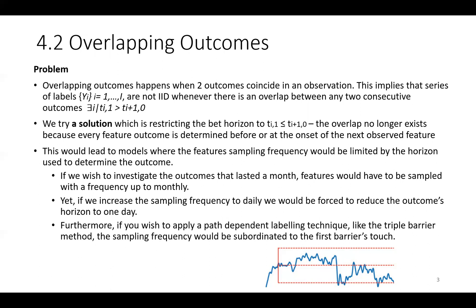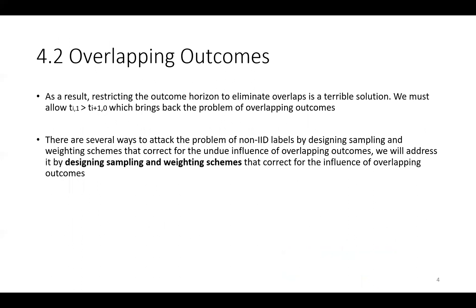Furthermore, if we wish to apply a path-dependent labeling technique like the triple barrier method, the sampling frequency would be subordinated to the first barrier's touch. As a result, restricting the outcome horizon to eliminate overlaps is a terrible solution, which brings back the problem of overlapping outcomes. There are several ways to attack the problem of non-IID labels by designing sampling and weighting schemes that correct for the undue influence of overlapping outcomes.